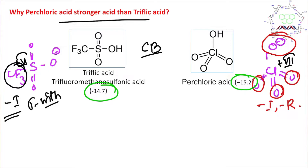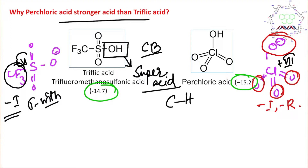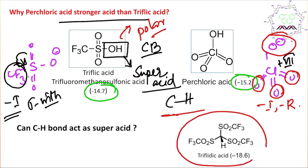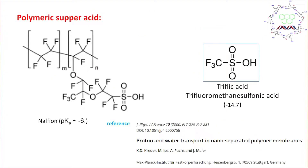We observe that O-H bonds show strong or super acidity, but can a C-H bond also act as a super acid? O-H bonds are more polar due to greater electronegativity difference, whereas C-H bonds are less polar. Yes, C-H bonds can act as a super acid. I have discussed this in a dedicated lecture on triflide acid, which is a super acid because its conjugate base — the carbanion — is highly stabilized by the withdrawing effect of three SO₂CF₃ groups.